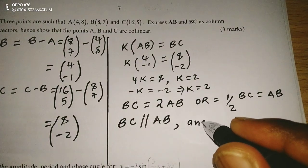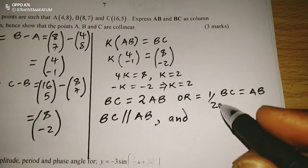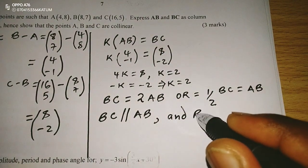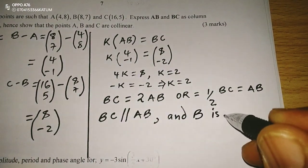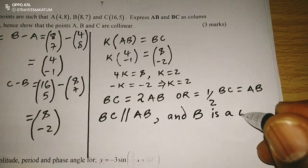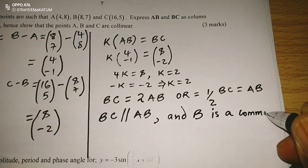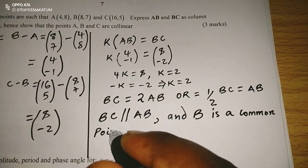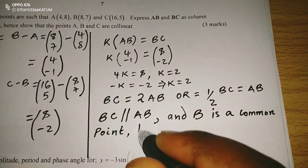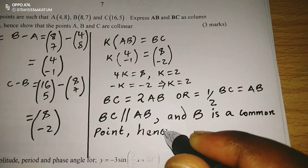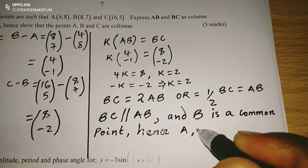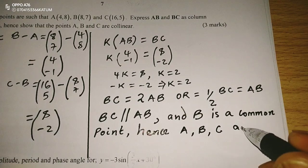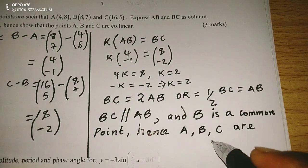We should also note that there is a common point, which is B. Therefore, A, B, and C are what we call collinear points.